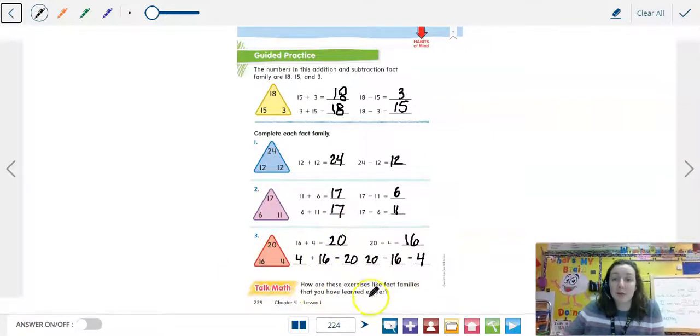So it says, how are these exercises like fact families that we've learned earlier? So they're exactly the same. We have our two addition, two subtraction. We're using all the numbers. We have our whole and our parts. They're just bigger numbers.